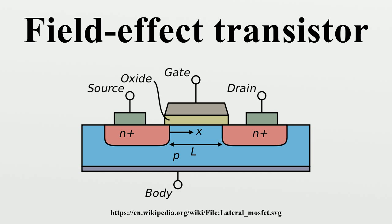N-channel: In an N-channel depletion mode device, a negative gate to source voltage causes a depletion region to expand in width and encroach on the channel from the sides, narrowing the channel.